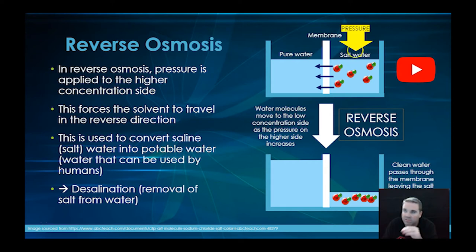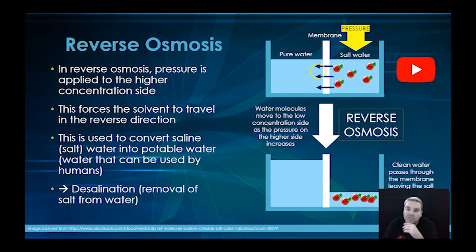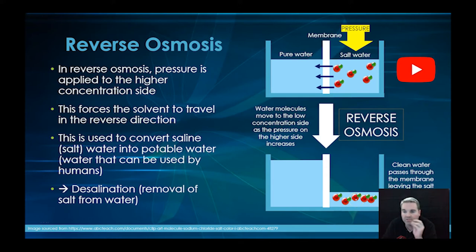As we put pressure on the highly concentrated side and compress the water, the pure water molecules are going to go back through the semi-permeable membrane. The sodium chloride is too big to go through the membrane, so it stays and becomes a very concentrated brine solution — a sodium chloride solution — and we end up with pure water on the other side.